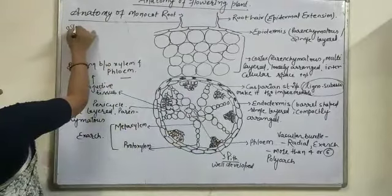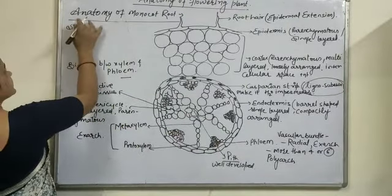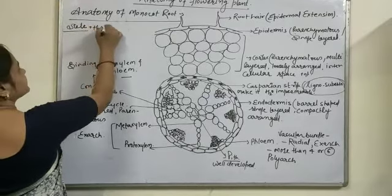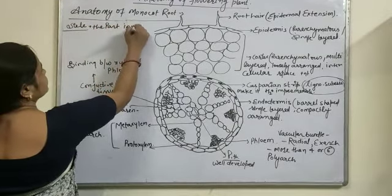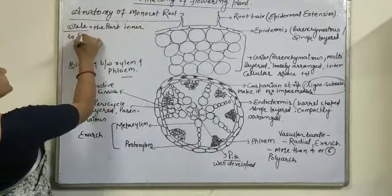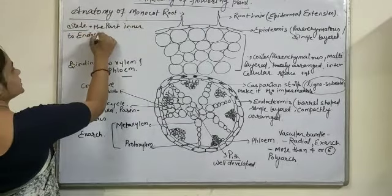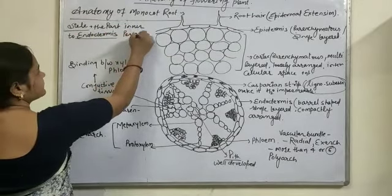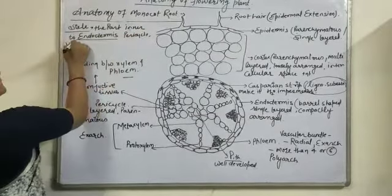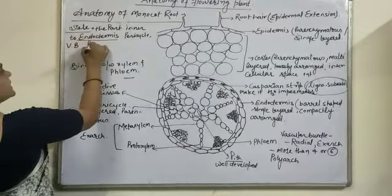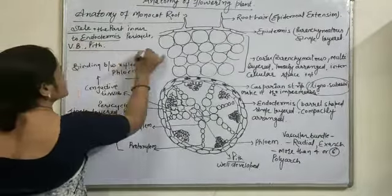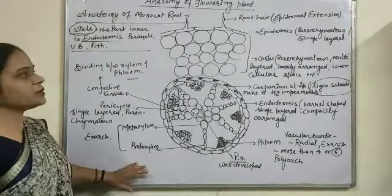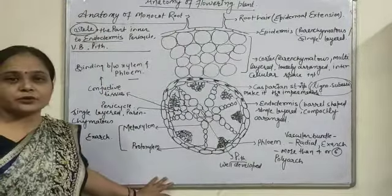One more thing — stele. What is stele? Stele means the part inner to the endodermis, consisting of the pericycle, the vascular bundle, as well as the pith — all together constitute the term stele. This is all about the structure of the monocot root.